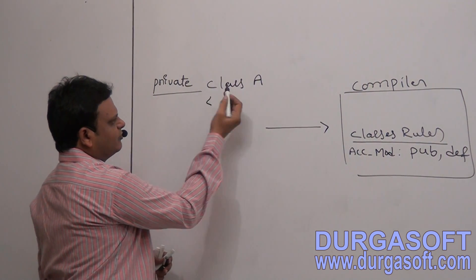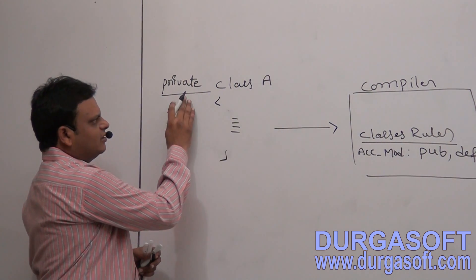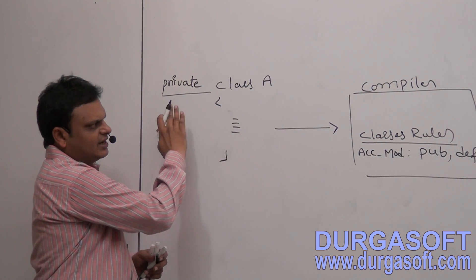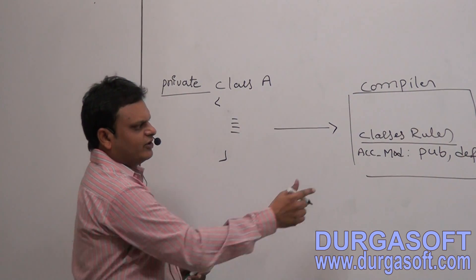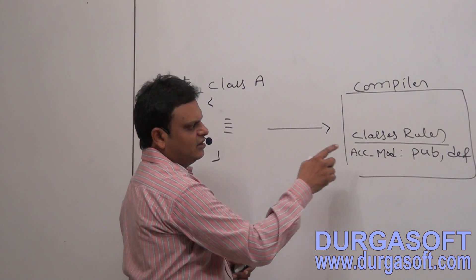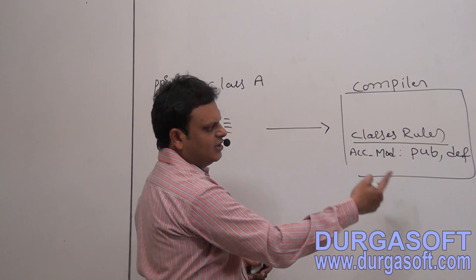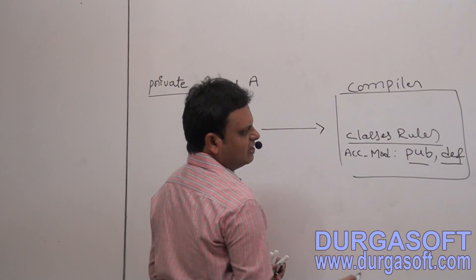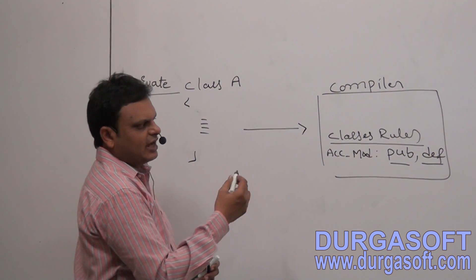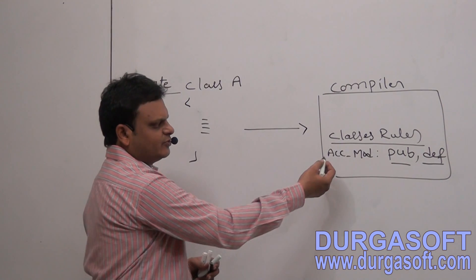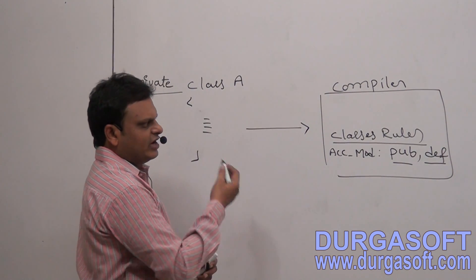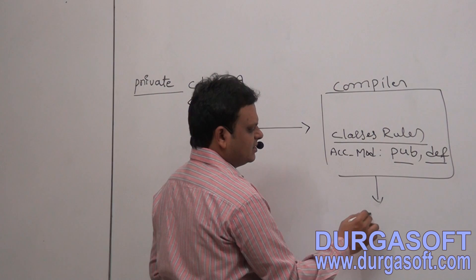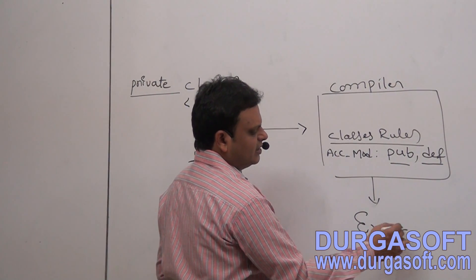Whenever we give this Java file to the compiler, the compiler first reads the declaration part of the class — especially the access modifier for that class, which is private. Then it goes to the class rules and checks whether private is available in the allowed access modifiers list. In the allowed list, only public and default are available; private is not available in the class rules access modifiers list. So immediately it is able to raise an error.